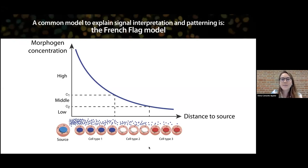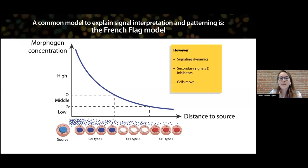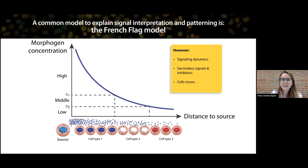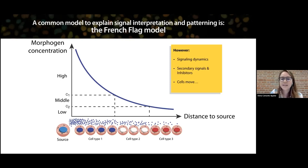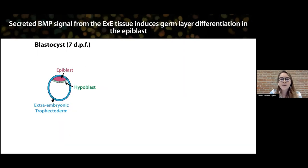However, even though this model is quite intuitive, it's a bit simple, because development is highly dynamic — cells are probably not feeling a constant concentration in time, but rather a dynamic signaling environment, with cells moving in the tissue, secondary signals being induced, and so on. I've been interested in understanding more about what processes are behind this interpretation of signaling.